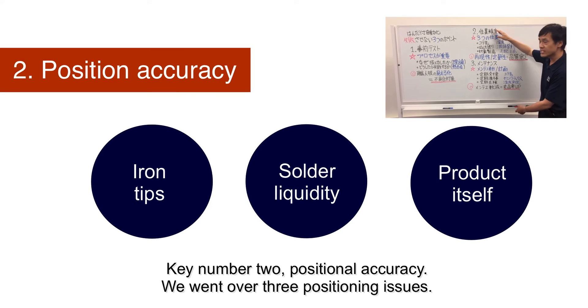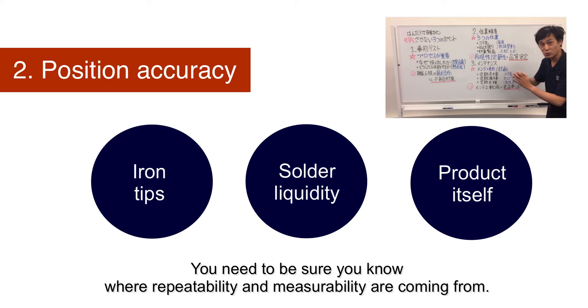Key number 2. Positional Accuracy. We went over 3 positioning issues. You need to be sure you know where repeatability and measurability are coming from.